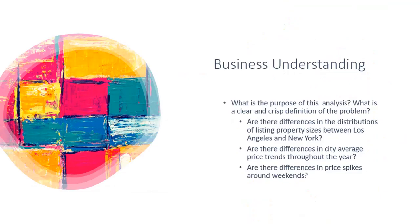Let's apply the CRISP-DM approach to the Airbnb pricing application then. First, we ask, what's the purpose of this analysis? And then we ask, what's a clear and crisp definition of the problem? We look and ask, are there differences in the distributions of property sizes between Los Angeles and New York? Are there differences in pricing trends between two cities? And are there differences in price spikes right around the weekend?